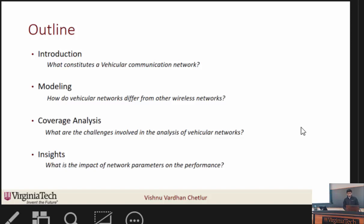We will then talk about the distinguishing feature of vehicular networks from other wireless networks. This leads us to doubly stochastic spatial models. We will then discuss a Cox process model used to model these vehicular networks. Once a reasonable model is chosen, the next step is to develop an analytical framework to understand network performance — specifically SINR-based coverage analysis — and discuss insights on the impact of network parameters on performance.